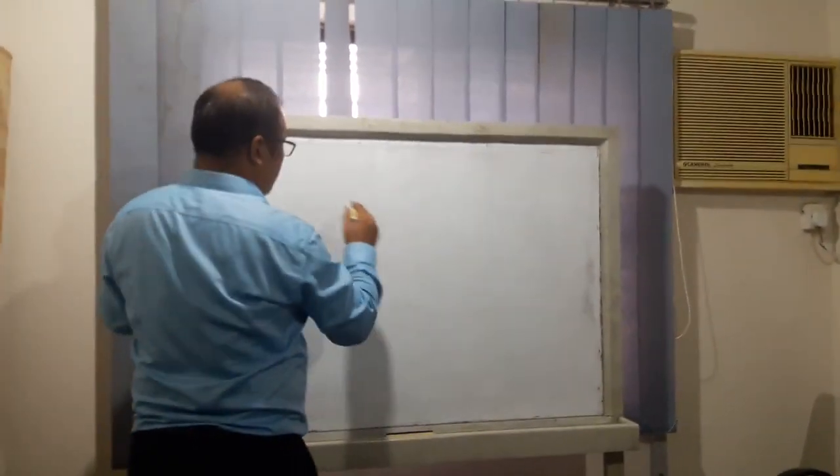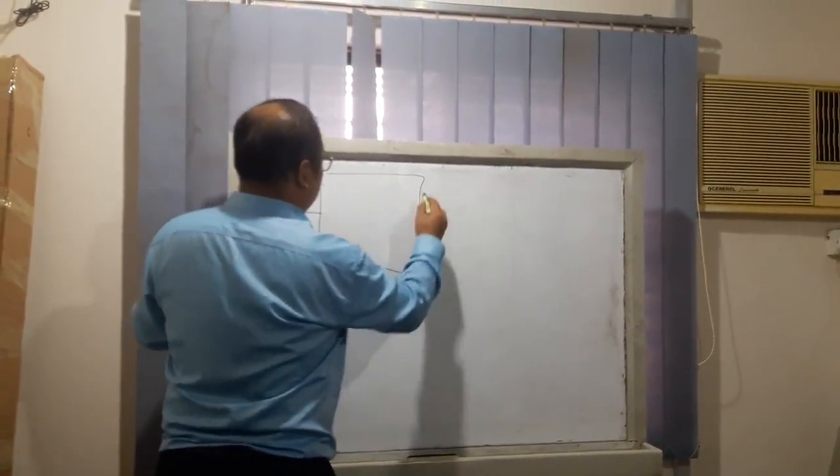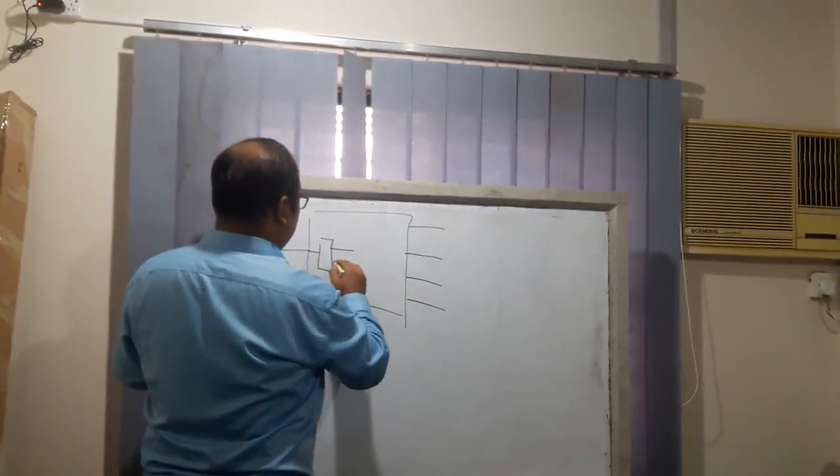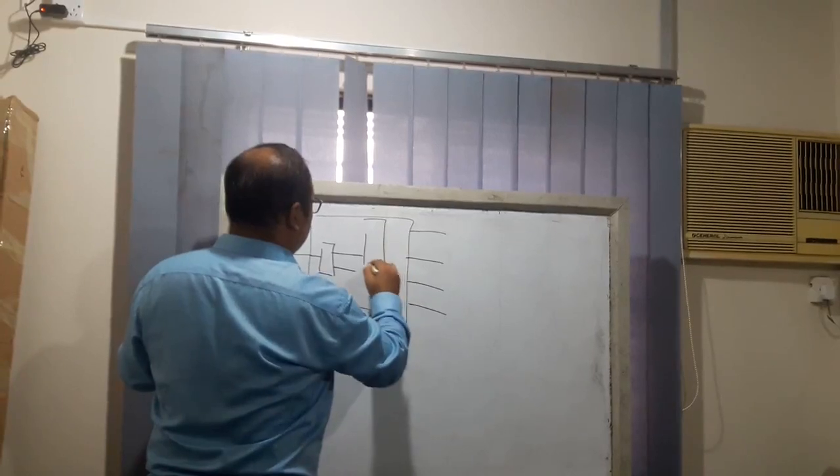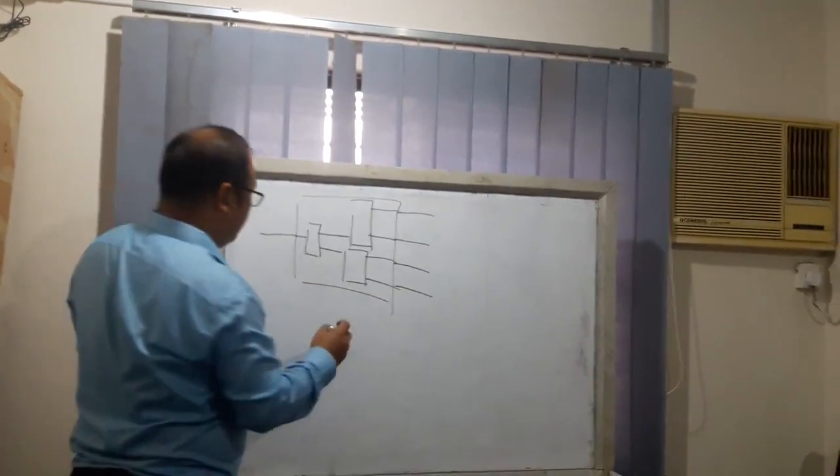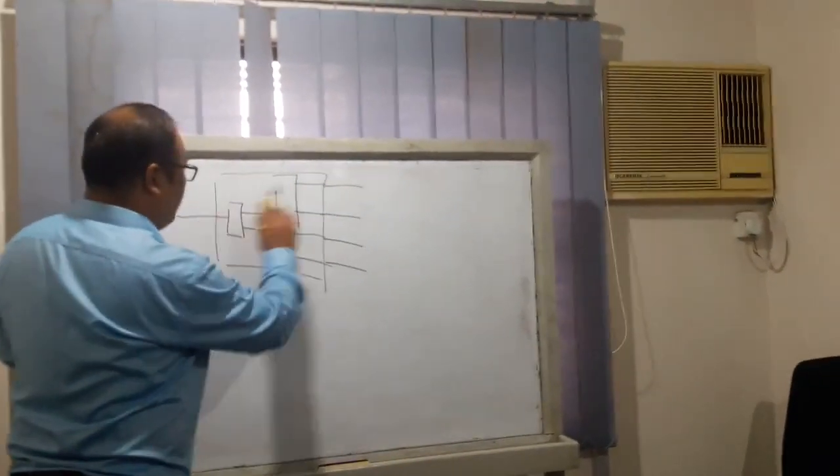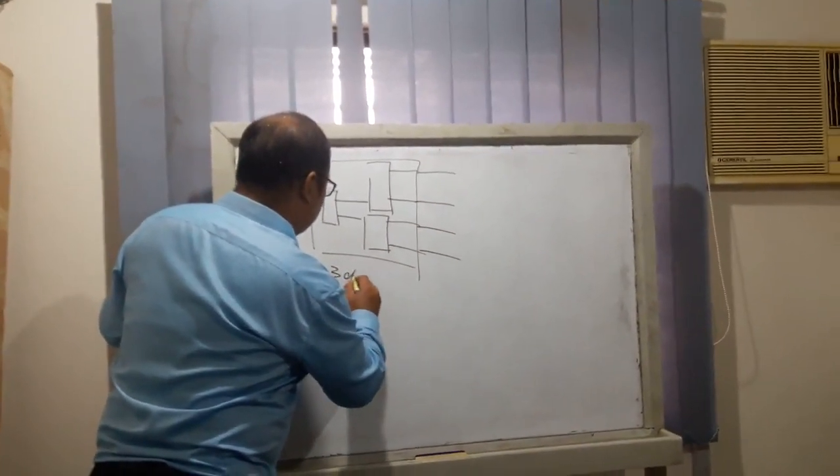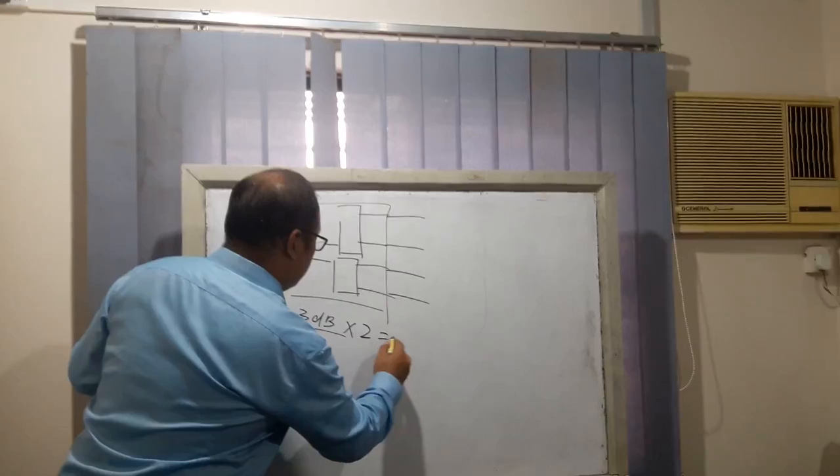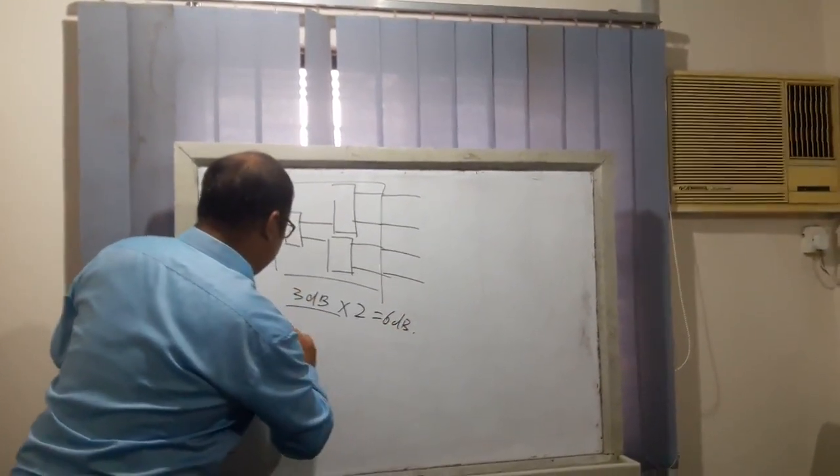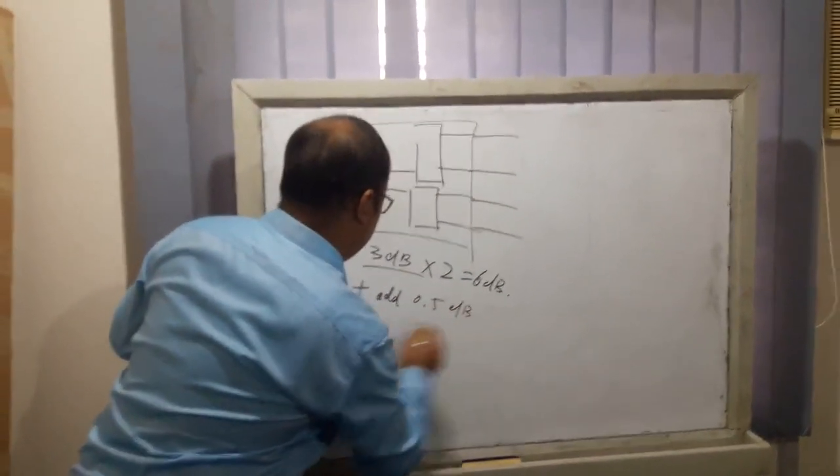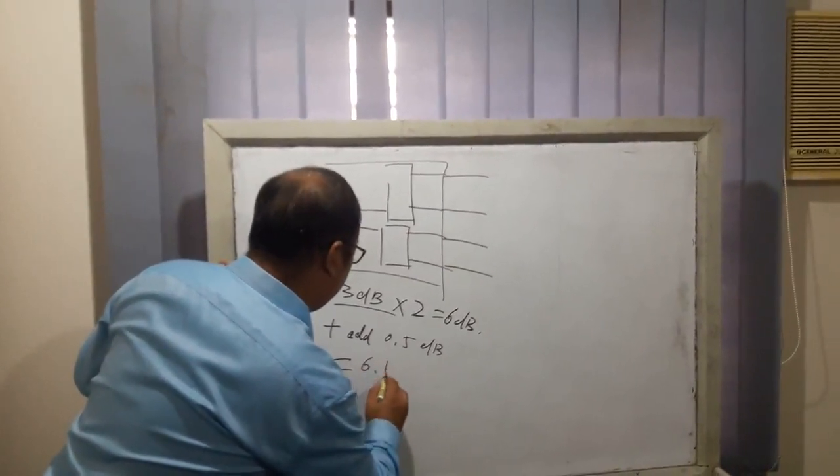As we know, the 1 to 4 splitter is just like 2 stage 1 to 2 to 2 splitter. So the attenuation of 1 to 4 is 3 dB times 2, which is 6 dB, plus additional attenuation 0.5 dB, equals 6.5 dB.